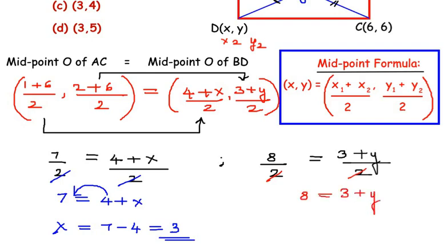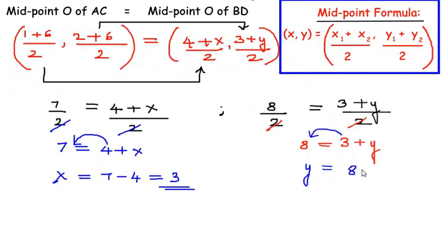And isolating y that is taking 3 on the other side of equal to sign, we get y = 8 - 3 which is going to be 5. So we got the values of the x and y coordinate of D that is going to be (3, 5).